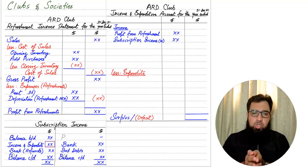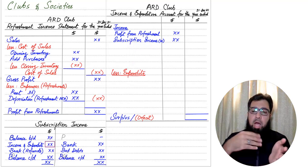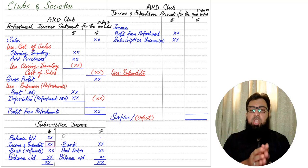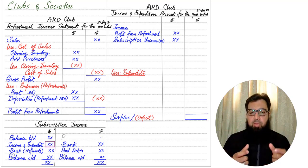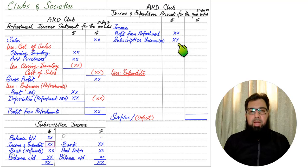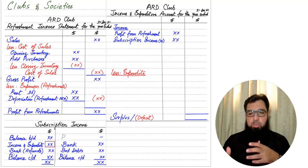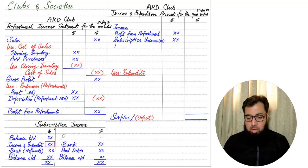There is one scenario where we do not need to prepare a subscription account at all: when the examination question clearly states, for example, that there are 100 members and each is charged a fee of $20. We simply multiply the number of members by the fee per member — 100 × $20 = $2,000 — and that figure goes directly into the income and expenditure account. Therefore, if the number of members and fee per member are given, we do not need to prepare a subscription account.